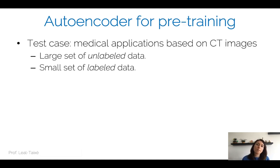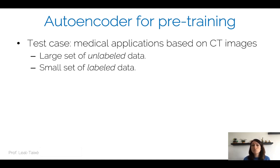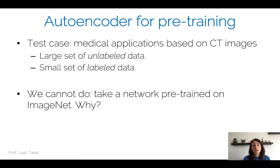This is very useful for pre-training, especially for medical applications such as CT images. In medical applications, you typically have a huge set of unlabeled CT images from different patients, but only a small set is actually labeled — because it's very expensive to have a trained doctor labeling data for diseases or localizing parts of an organ. The question is: can we use autoencoders to leverage this large set of unlabeled data for unsupervised training? The statistics of natural images on ImageNet are very different from CT images, so a network pre-trained on ImageNet won't help much.